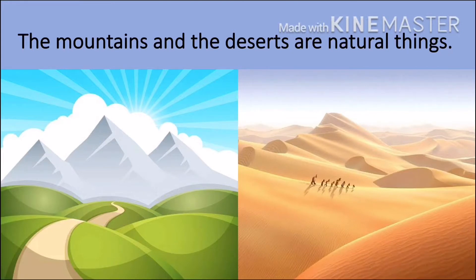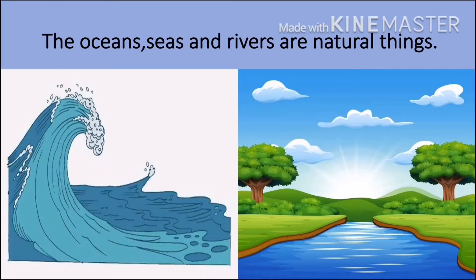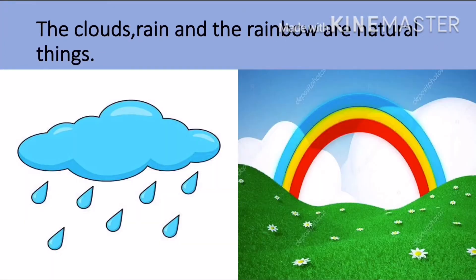The mountains and the desert are also natural things because they have been given to us by mother nature. The oceans, seas and the rivers are also natural things because they have been given to us by mother nature. The clouds, rain and the rainbow are also natural things because they have been given to us by nature.